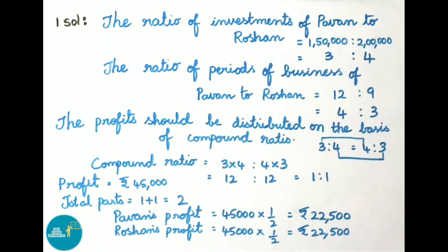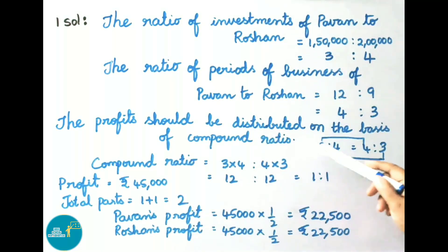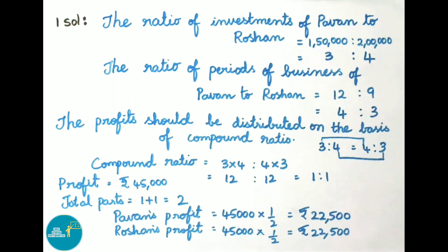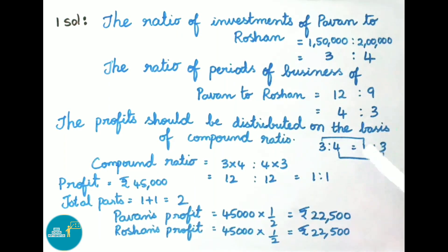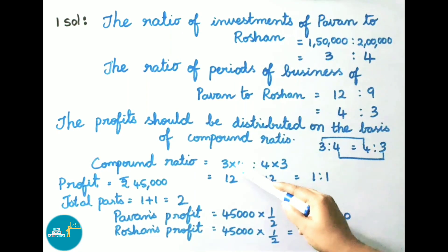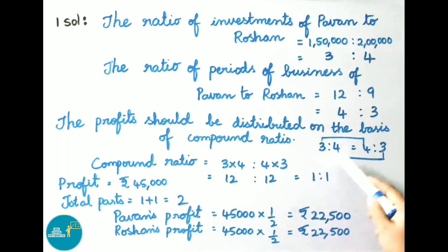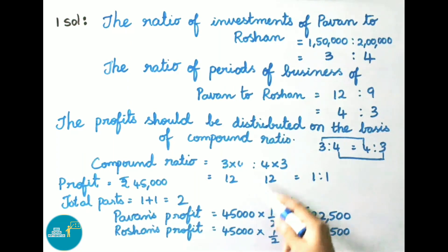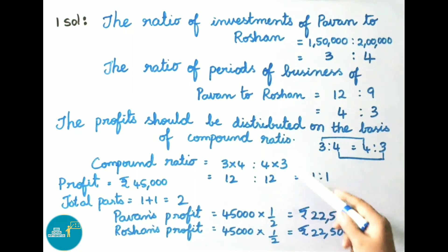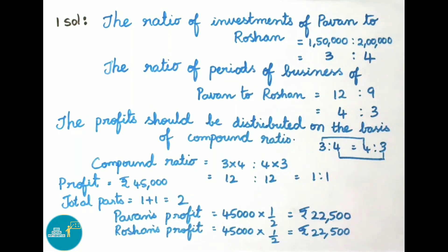The profit should be distributed on the basis of compound ratio of the previous two ratios, that is 3 is to 4 and 4 is to 3. Using compound ratio formula A into C is to B into D, that is 3 into 4 is to 4 into 3, that equals to 12 is to 12. Dividing both terms by 12, the ratio is 1 is to 1.